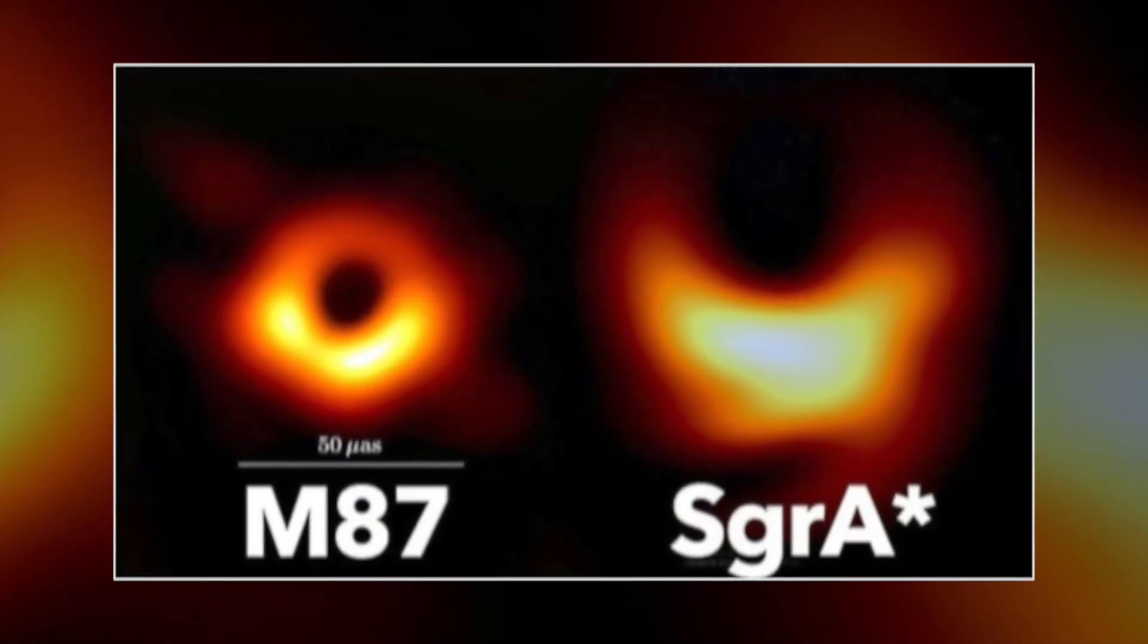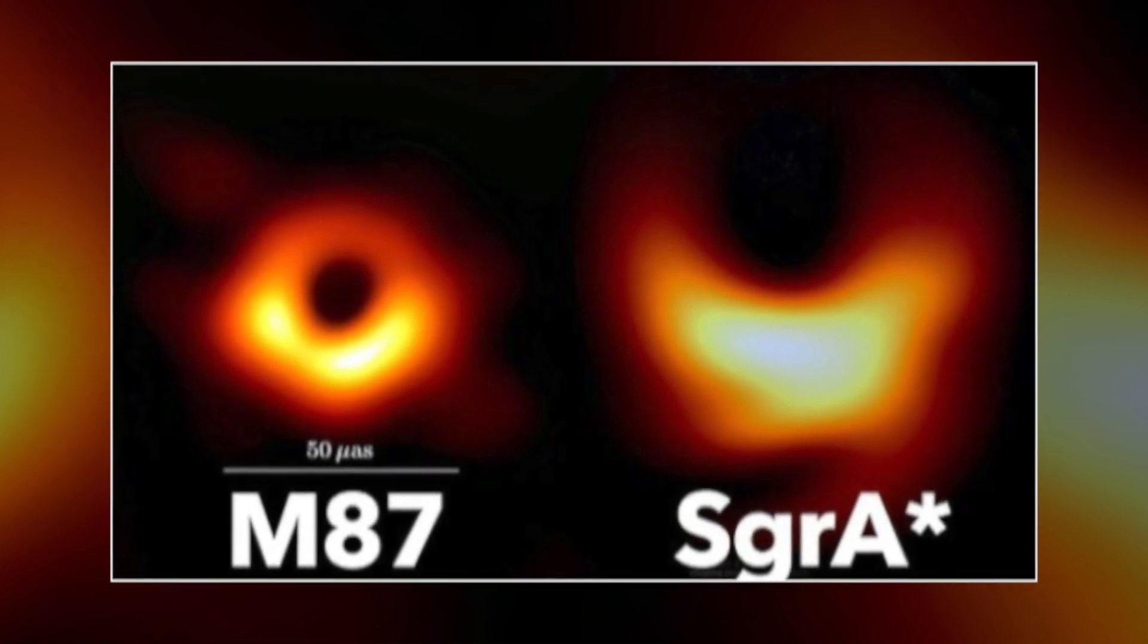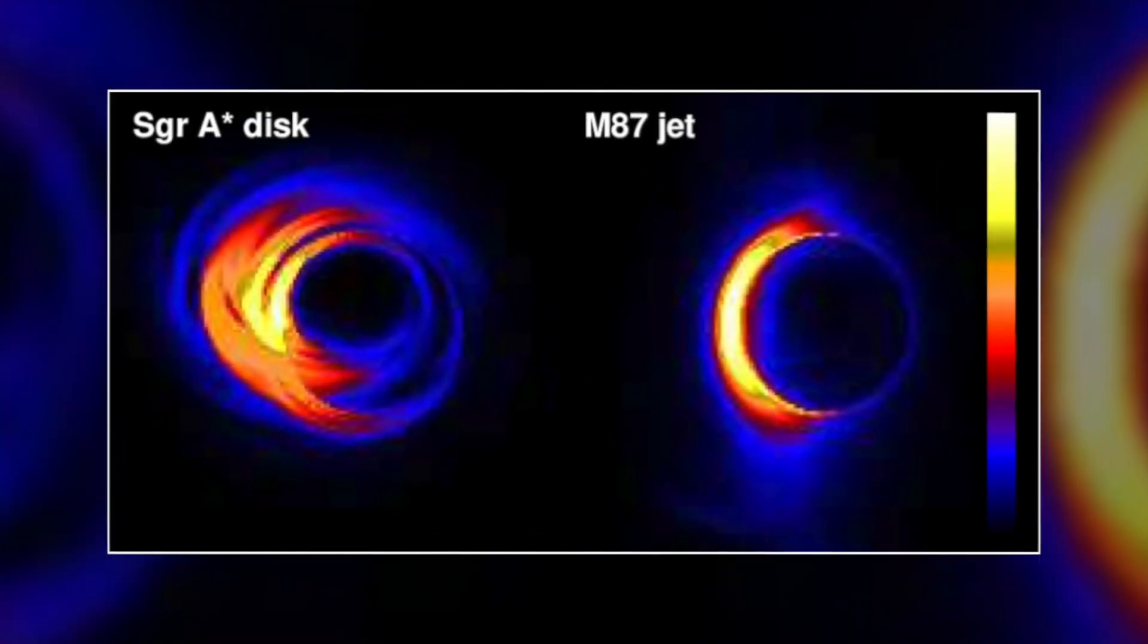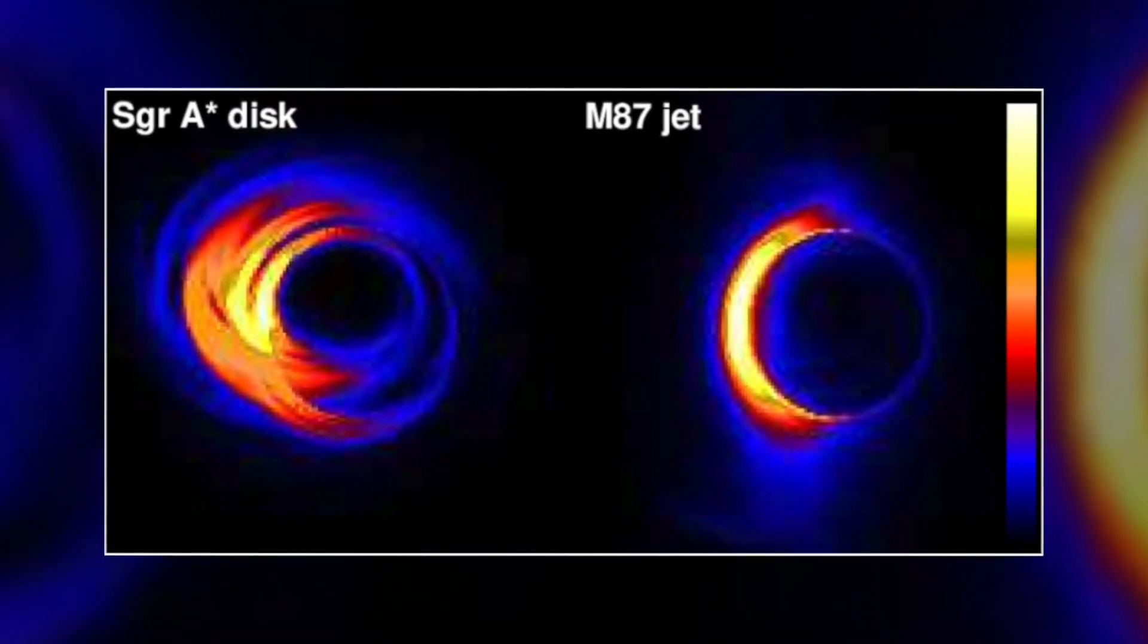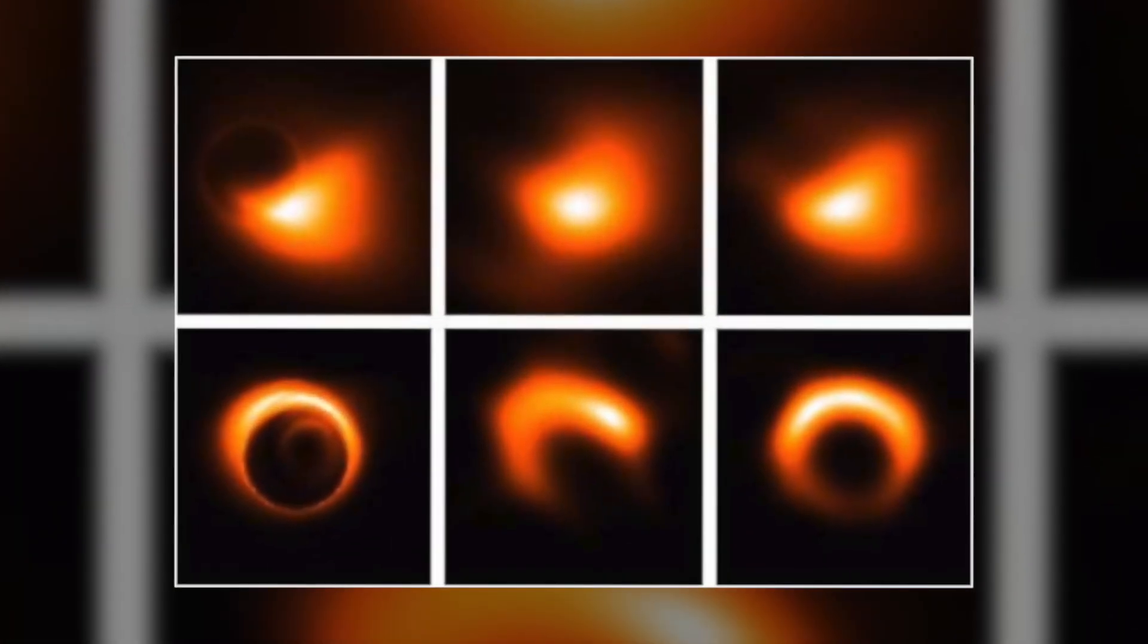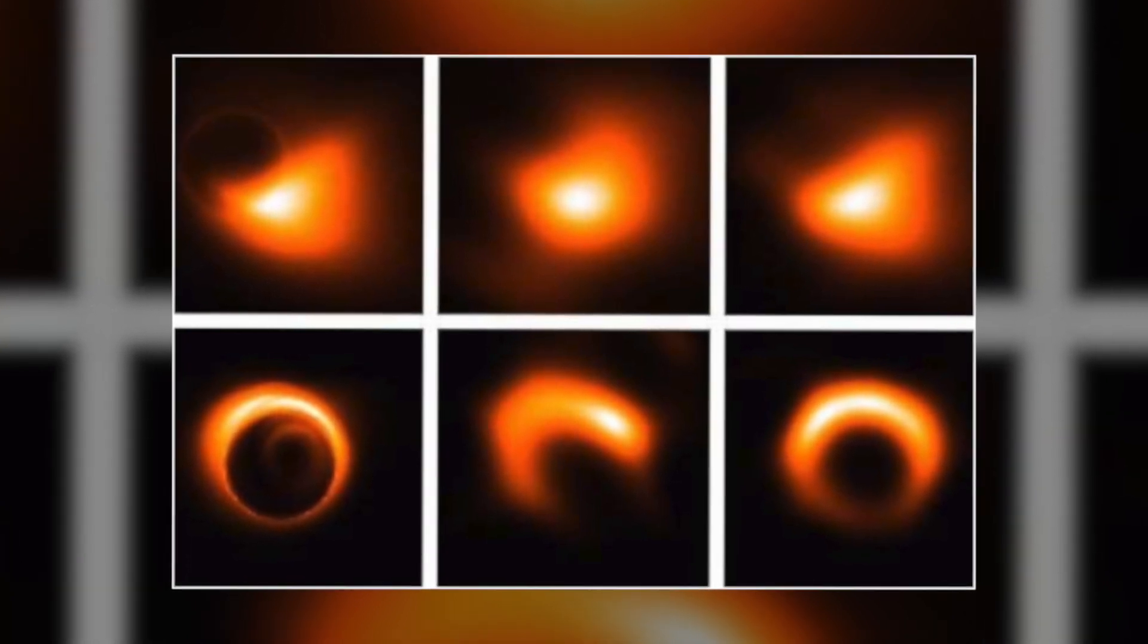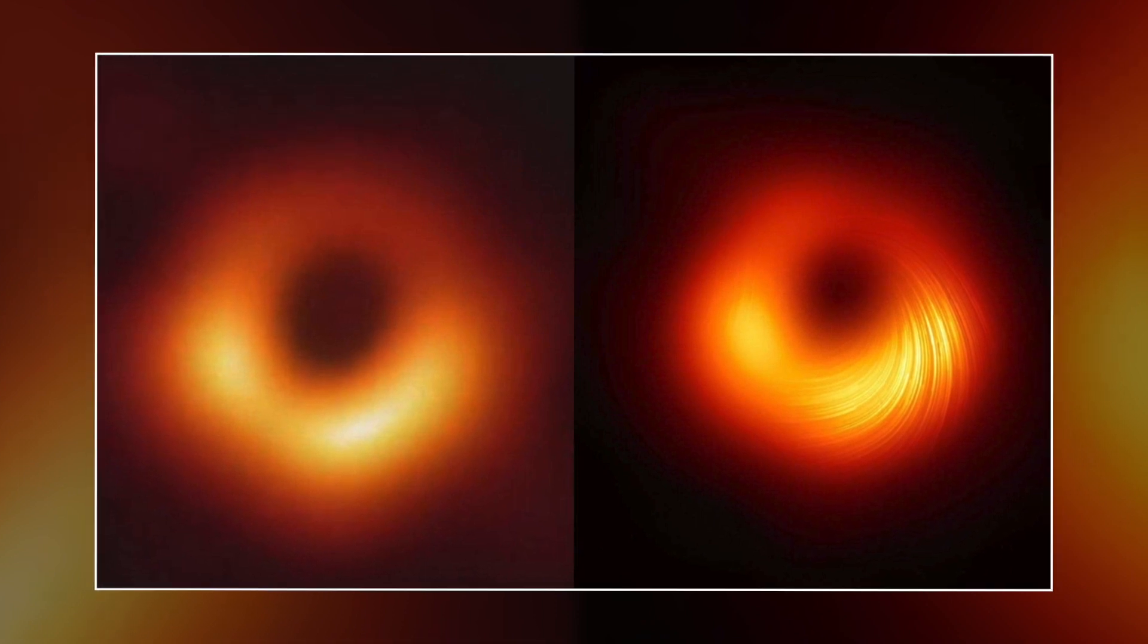M87, the first black hole to achieve star status, is about 1,000 times larger than the Sagittarius A star and much more stable. But the images are much the same – a coup for EHT and Albert Einstein. Einstein suggested that black holes have only three characteristics – mass, spin, and charge, and no hair, as astrophysicists like to call additional properties.